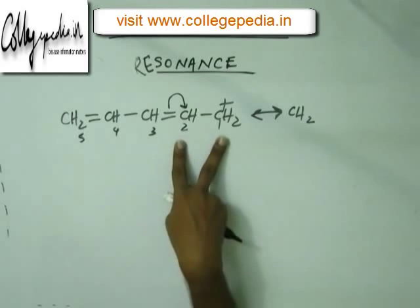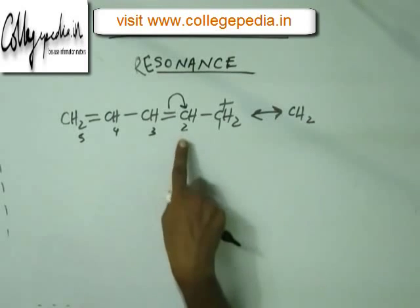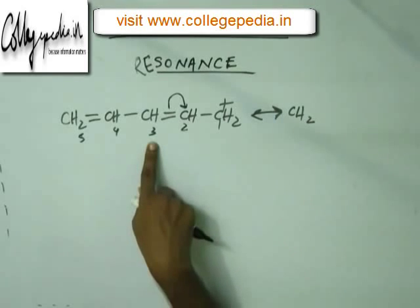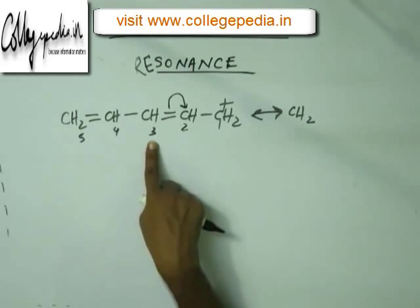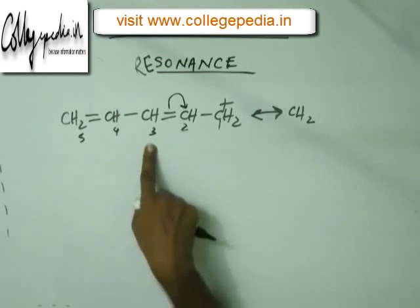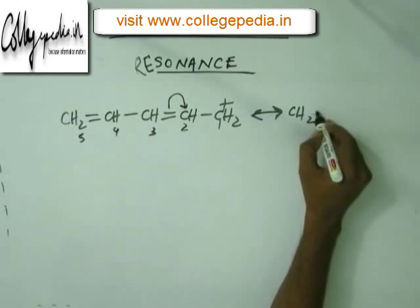When we bring the plus and minus charges adjacent, a new pi bond forms. C3 develops a positive charge because its electron from the pi bond was given to C2 — so C3 is devoid of its electron. The positive charge jumps from C1 to C3, and the structure changes accordingly.